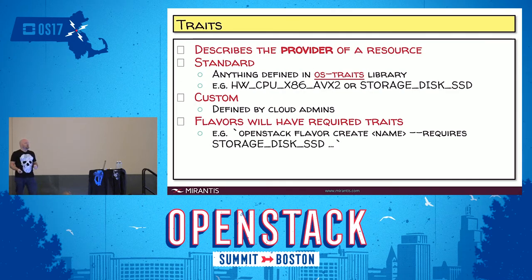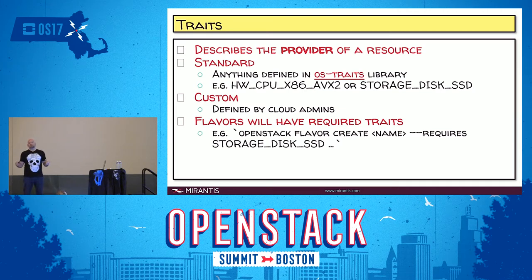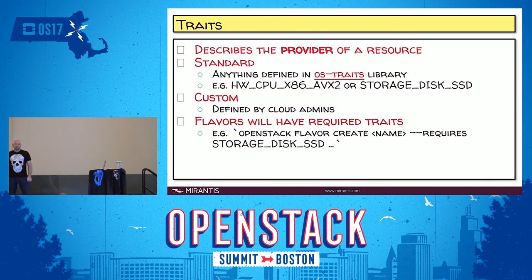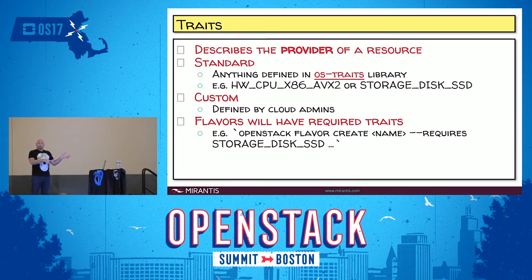Traits describe the provider of a resource, not the resource itself. We have an OS traits library which lists all standard traits — things like x86 CPU instruction set extensions and whether or not a storage drive is SSD. Anything prefixed with custom underscore is a custom trait. Cloud admins can create traits and associate them with resource providers. Flavors will have a set of required traits — when you launch an instance with that flavor, it'll ask the scheduler to find resource providers that have those traits associated.